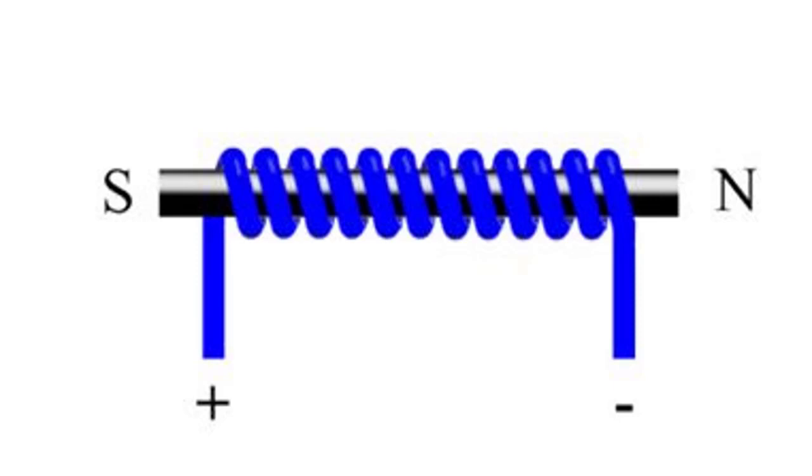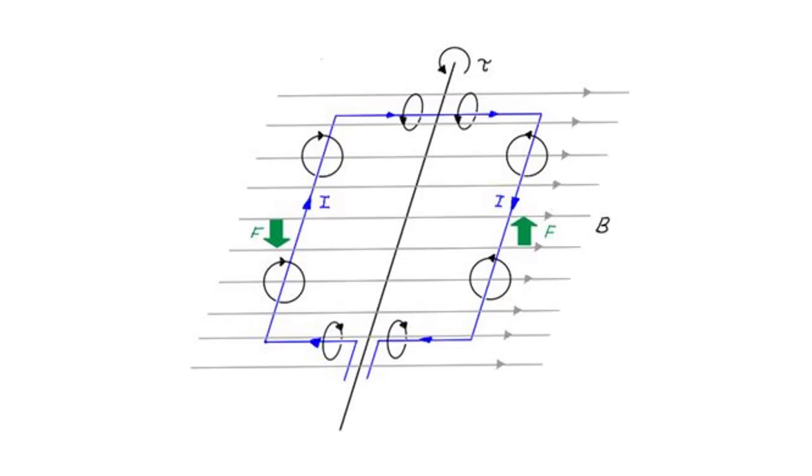Electromagnets can allow a stronger magnetic field to be produced than that of a permanent magnet. An electric current flowing through a conductor produces the magnetic field and the loop in a simple DC electric motor is in fact a simple electromagnet.